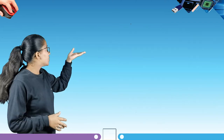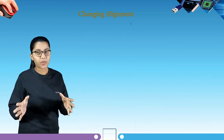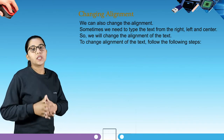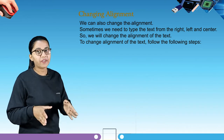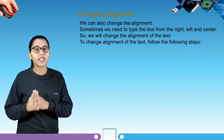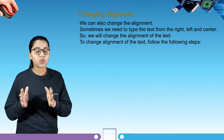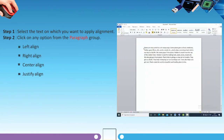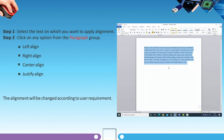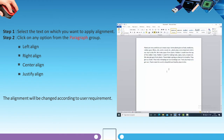Our next topic is changing alignment. We can also change the alignment — sometimes we need to type text from the right, left, or center. To change the alignment, follow these steps: Step one — select the text on which you want to apply alignment. Step two — click on any option from the Paragraph group. There will be four options: left align, right align, center align, and justify align. Choose the option you want, and the alignment will be changed according to the user's requirement.